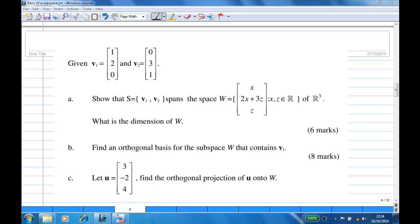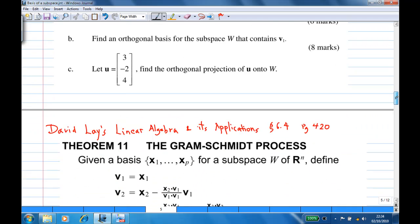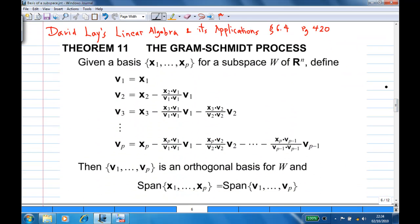Find an orthogonal basis for the subspace W that contains v1. For this, we need to refer to David Lay's Linear Algebra and Its Applications, section 6.4, page 420, Theorem 11, the Gram-Schmidt process.